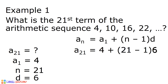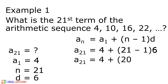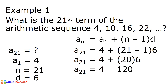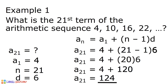Let us solve. 21 minus 1 is equal to 20, so our equation becomes a sub 21 is equal to 4 plus 20 times 6. 20 times 6 is equal to 120, so it becomes a sub 21 is equal to 4 plus 120. 4 plus 120 is 124, and that is our 21st term of the arithmetic sequence 4, 10, 16, and 22.